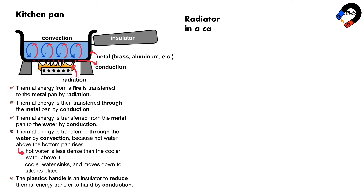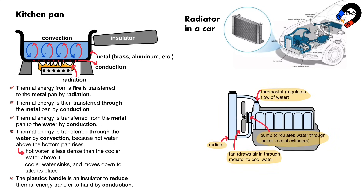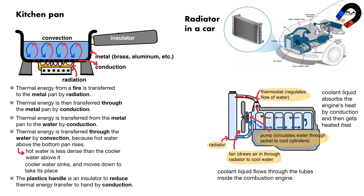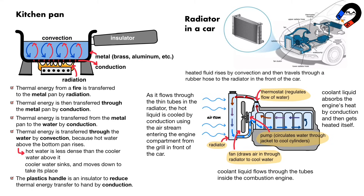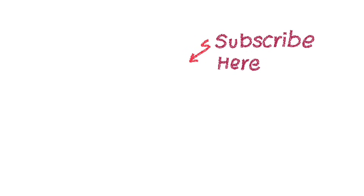A radiator is a heat exchanger in a car that helps keep the engine cool. Coolant liquid flows through tubes inside the combustion engine, absorbing the engine's heat by conduction, and then gets heated itself. The heated fluid rises by convection and travels through a rubber hose to the radiator at the front of the car. As it flows through the thin tubes in the radiator, the hot liquid is cooled by conduction using the air stream entering the engine compartment from the front grill. Once cooled, the fluid returns to the engine to absorb more heat. The air picks up heat from the coolant by convection, heated air is blown away by the fan, and colder air replaces it.